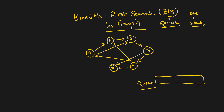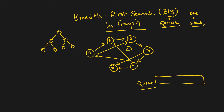In a graph we can have cycles — for example, from 1 we can go to 2, 2 to 3, 3 to 4, and 4 back to 1. This creates a cycle. If we do BFS without tracking visited nodes, we can end up in endless cycles. So it is important to keep track of nodes already visited. In a tree there are no cycles, so we don't need a visited array, but in a graph it is important. For that, we will keep a boolean array.